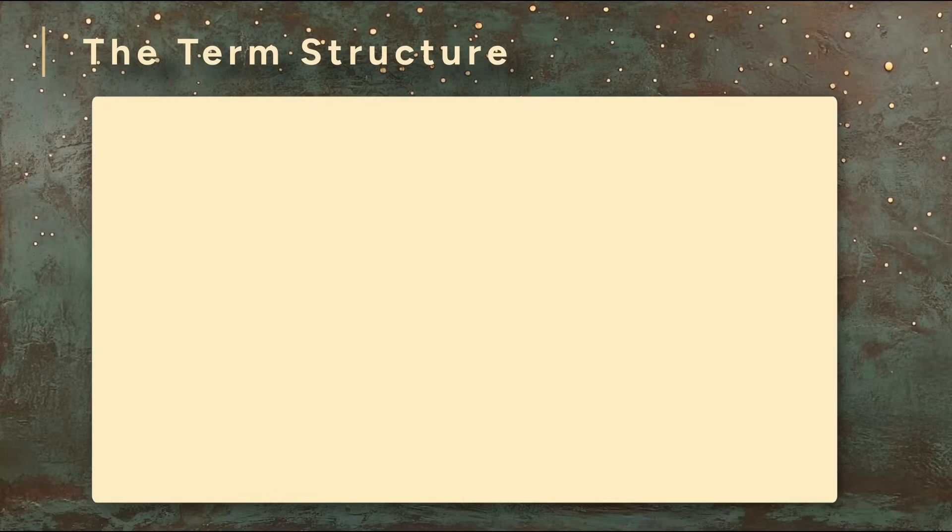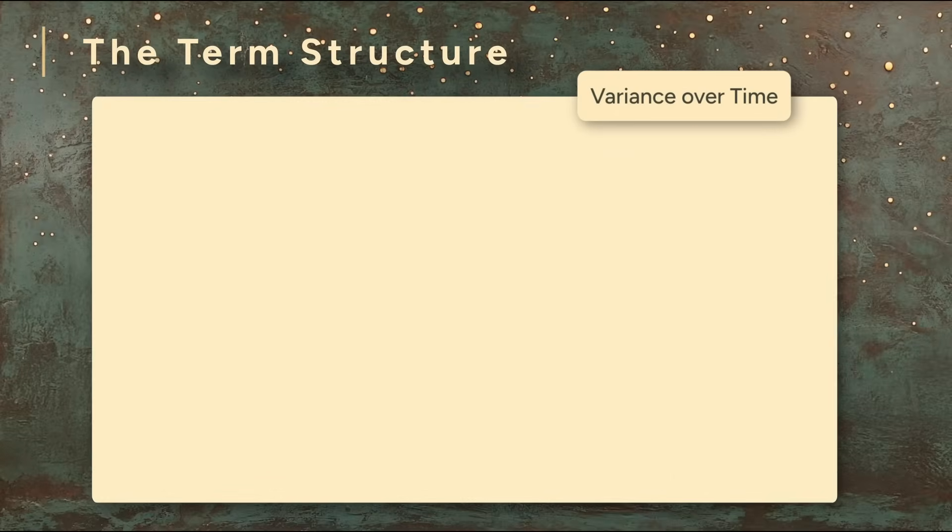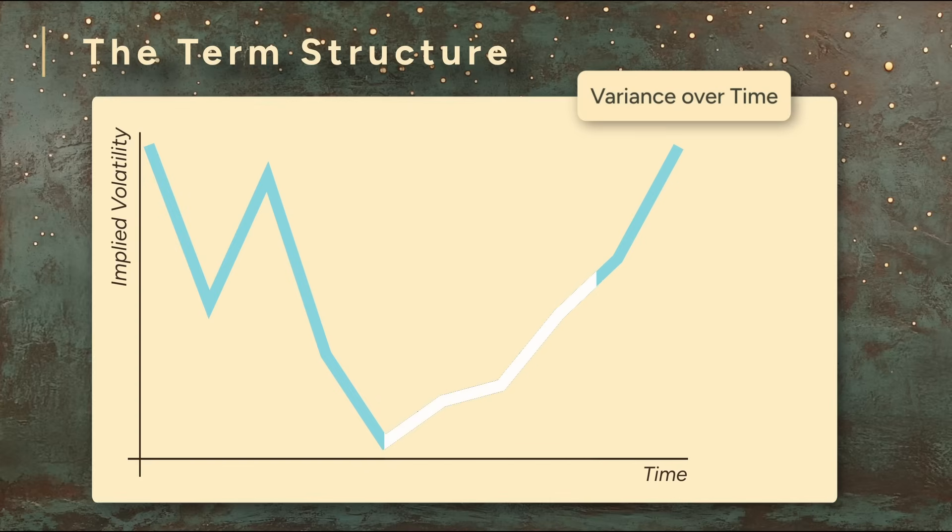We'll now explore in more detail how implied volatility varies over time. We'll often see the volatility surface rise as it gets further away from the present. Just like a term structure in bonds or interest rates, it's a way of noting how market expectations evolve over time. So what's the general principle here?